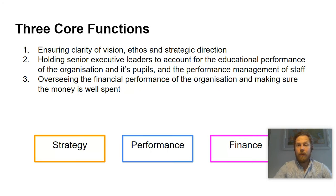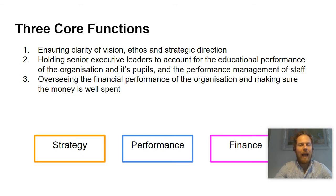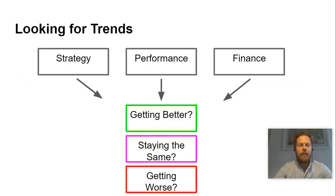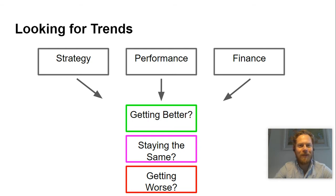Well, really, they're trying to fulfil three core functions, and you can read those in detail in your own time. But essentially, it boils down to strategy — where is the school going? Performance — how well is it achieving that? And finance — how is it using the public money it's been given to do so? Governors are really looking for trends: are things getting better, staying the same, or getting worse over time? And if so, why? And what is the school going to do about it?